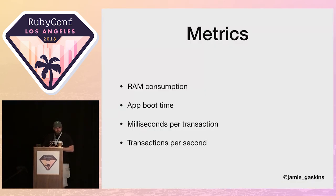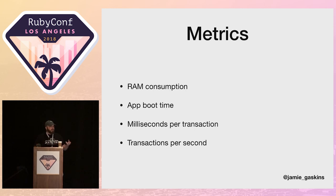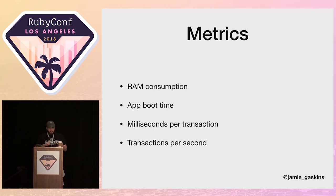Some metrics we need to think about: you may want to optimize RAM consumption when your production machines are approaching 100% RAM usage. App boot time can be problematic if rebooting your production app causes significant delays in processing. Milliseconds per transaction matters if customers have to wait before they can proceed — and by transactions I mean any unit of work: a web request, a background job, processing a message queue. Transactions per second is important for tracking how much you can process at scale.